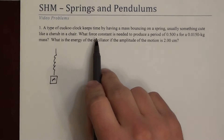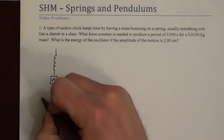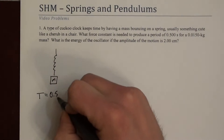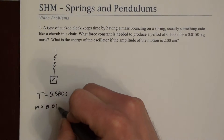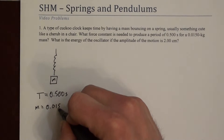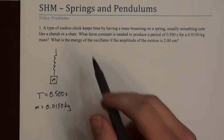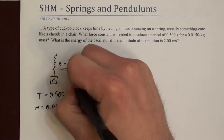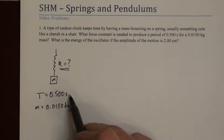It asks what force constant is needed to produce motion with a period T of 0.5 seconds for a mass of 0.0150 kilograms. It asks for a force constant — what this means is the spring constant k. The question is: what k results in simple harmonic motion with this period given this mass?